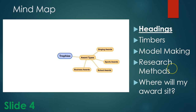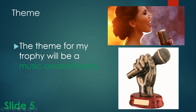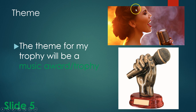Under 'where will my trophy sit' that could be on a shelf in your bedroom, in the kitchen, or in the sitting room. The next slide, slide five, is our theme. You can do whatever theme you want — a sports award, a school award, a business award. I picked an example of a music award. If you have a sports award, get a picture of any sport you want and put it in, then get a trophy similar to that sport. For example, if it's a hurling theme, get a hurling award and put it in.